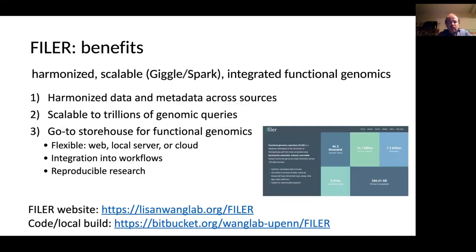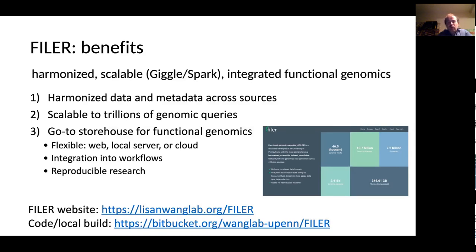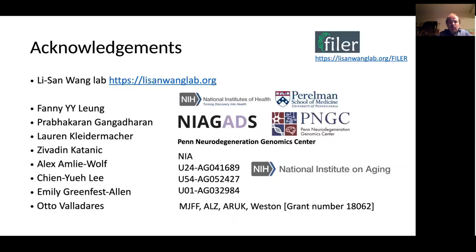To sum up, Filer provides a harmonized functional genomic data collection across over 20 data sources including ENCODE, and all of this data can be scalably accessed. Filer can be accessed through a web interface or deployed on your local server or in the cloud environment. We hope this flexibility will make Filer a go-to place for functional genomics data. I would like to wrap up by thanking all the people who contributed to this work as well as the funding agencies. Thank you for your attention.